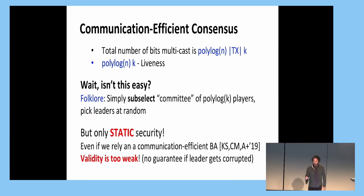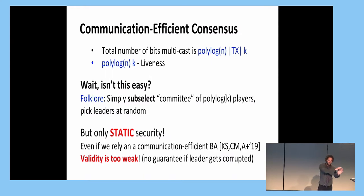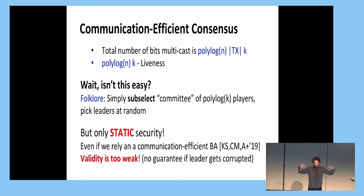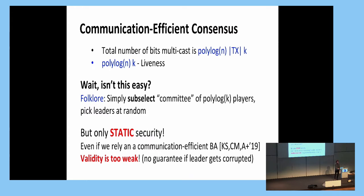Even if we have a communication-efficient Byzantine agreement protocol that is adaptively secure, this method still doesn't work. There has been recent work, including by ourselves, showing how to achieve Byzantine agreement protocols that are communication-efficient and adaptively secure, but plugging them into this paradigm still fails. The issue is the leader: if the leader is corrupted, the validity condition from the underlying Byzantine agreement protocol gives us nothing, because a corrupted leader can send garbage and we are not guaranteed to make any progress.